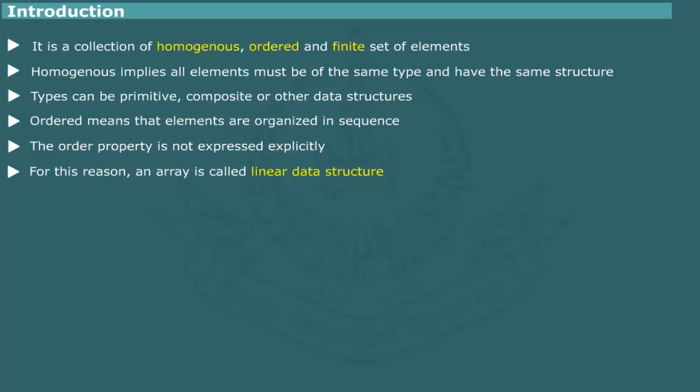Another important characteristic of an array is the finiteness. By finite, we mean that each array can contain a fixed number of elements. In other words, an array data structure can hold specific number of elements. This number is called size or length of array.